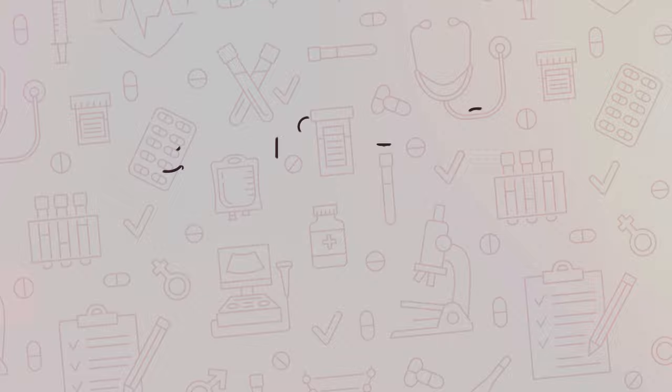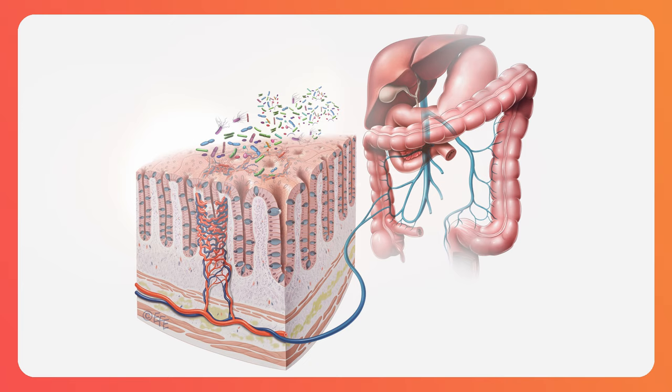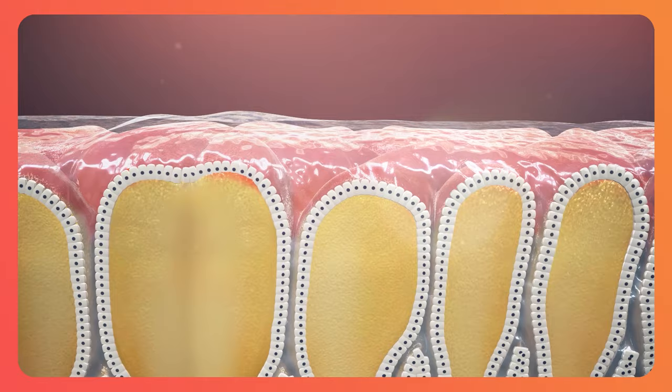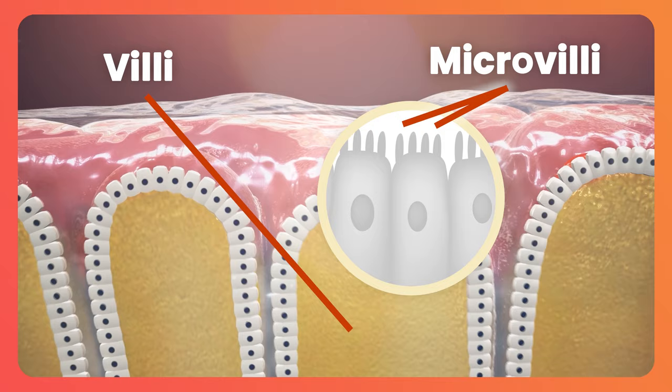The first concept is that of the intestinal barrier, which is a term used to describe the protective component of the gut shielding us against invasion by noxious microbes and toxins. Due to the organ origami that we see with the gut folding upon itself many times over, and creating little projections called villi and microvilli, the intestinal barrier covers a large surface area of about 400 square meters.